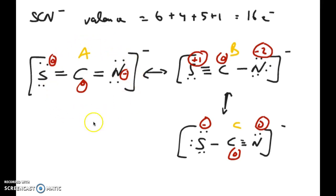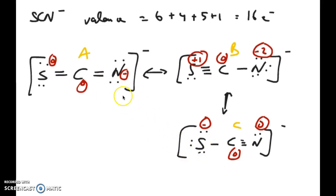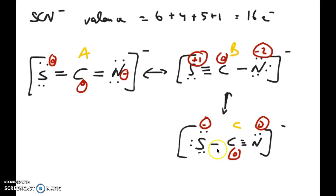It doesn't necessarily mean structure A is 100% of the experimental structure — it might be around 70% like A and 30% like C. You would average these as a weighted average, similar to the concept of isotopic abundance from earlier in the course. The actual S–C bond might be somewhere between single and double, but since A is the better structure, it would be closer to a double bond than a single bond.